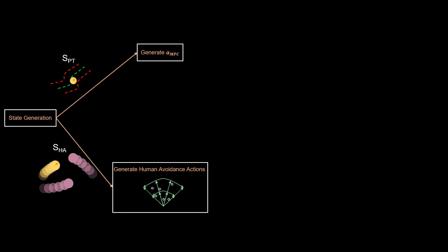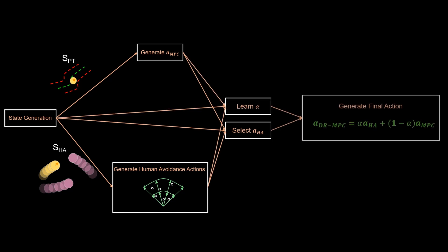The basics of Dr. MPC are that we first individually learn and compute the MPC action and six human avoidance actions. We then learn which human avoidance action to select and learn a fusion parameter alpha. The final action is simply a weighted sum between the two individual actions.